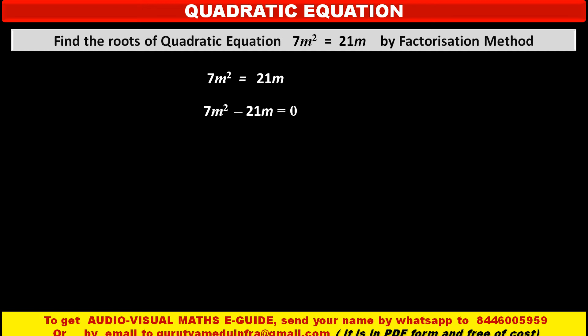Now see, in this equation, two terms are given, and in these two terms, 7m is a common factor. So by taking 7m common, we get 7m times, in bracket from the first term remaining m, minus from the second term remaining factor 3.